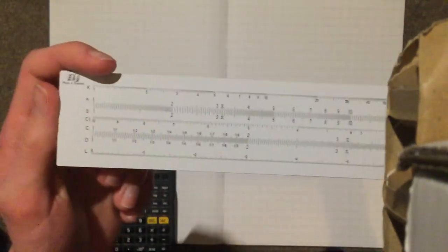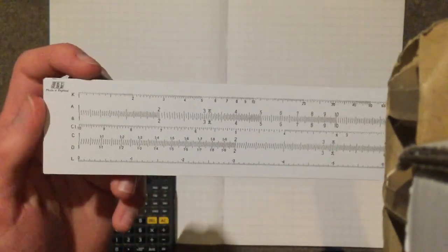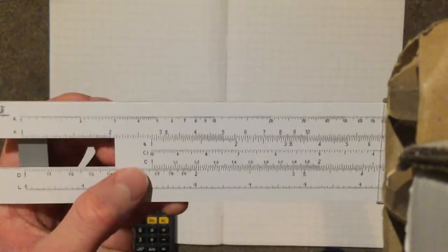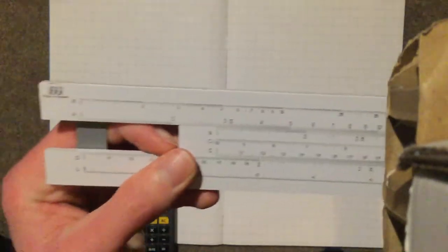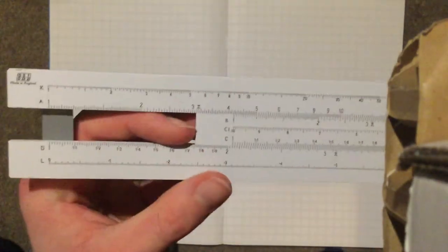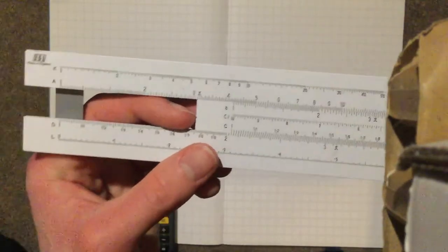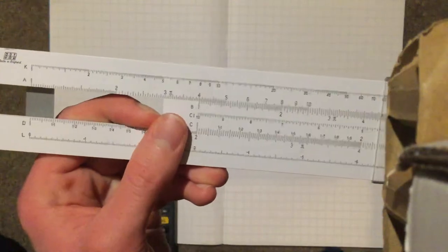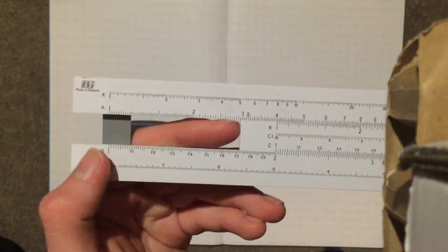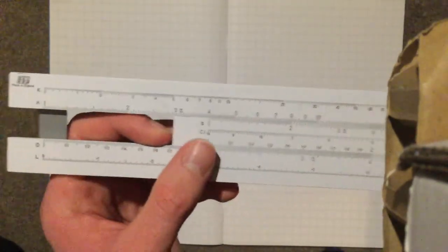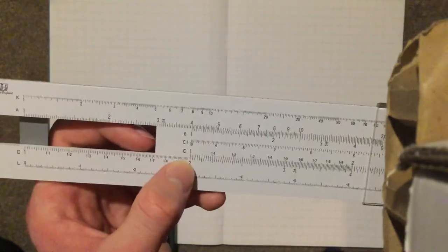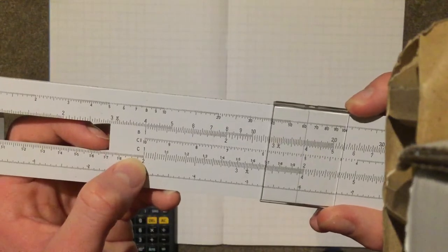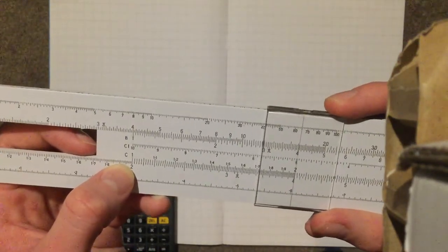To start, let's do a very simple multiplication, 2 times 2. So you line up the 1 on the C scale with the number you want to multiply, 2 on the D scale. Then you follow along on the C scale to the number you want to multiply by, so we've got 2, and we get 4 on the D scale.